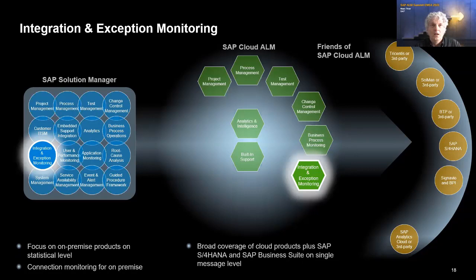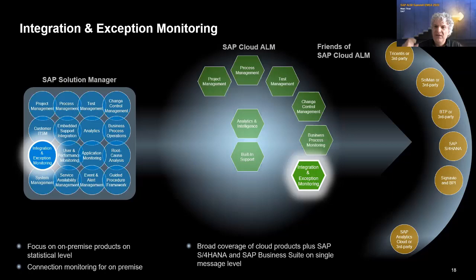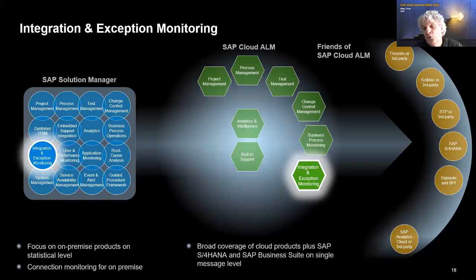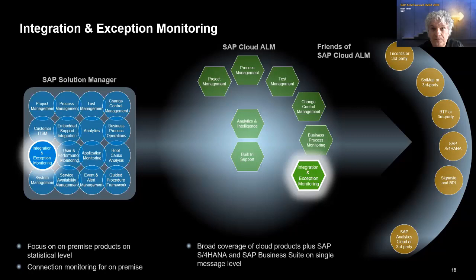On integration and exception monitoring, Solution Manager's focus is on-premise products at a statistics level — not tracking every single message — with connection monitoring on-premise. In Cloud ALM, we have a very broad coverage of cloud products plus S/4HANA and Business Suite, but we do it on a single-message level — really tracing each individual execution of the method, while Solution Manager has only an aggregated view. This is a big advancement in functionality: if a single execution fails, you can look at the payload of that message. So this capability in Cloud ALM is not only available but much stronger, with broader coverage supporting the hybrid world and item-level visibility.